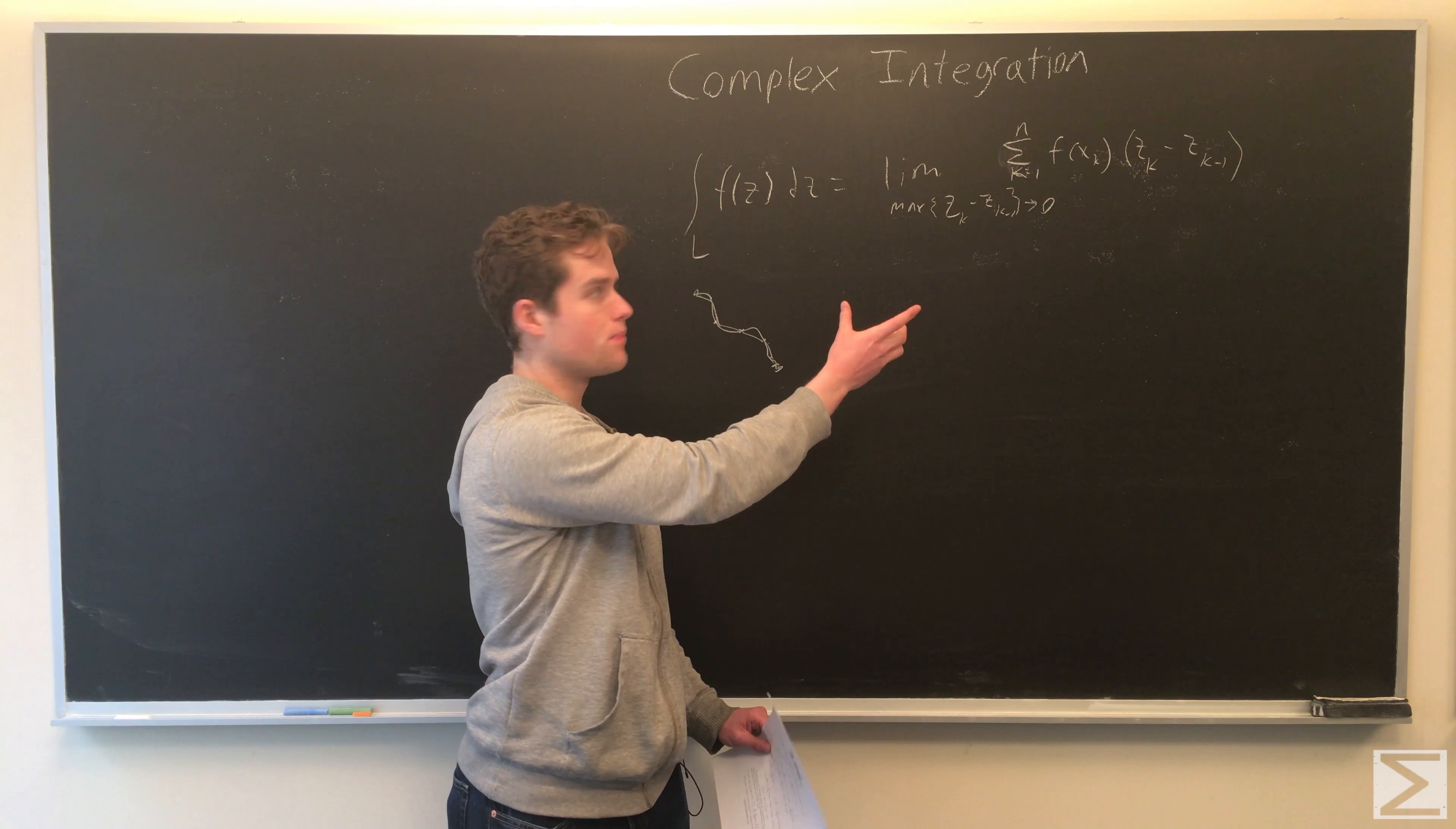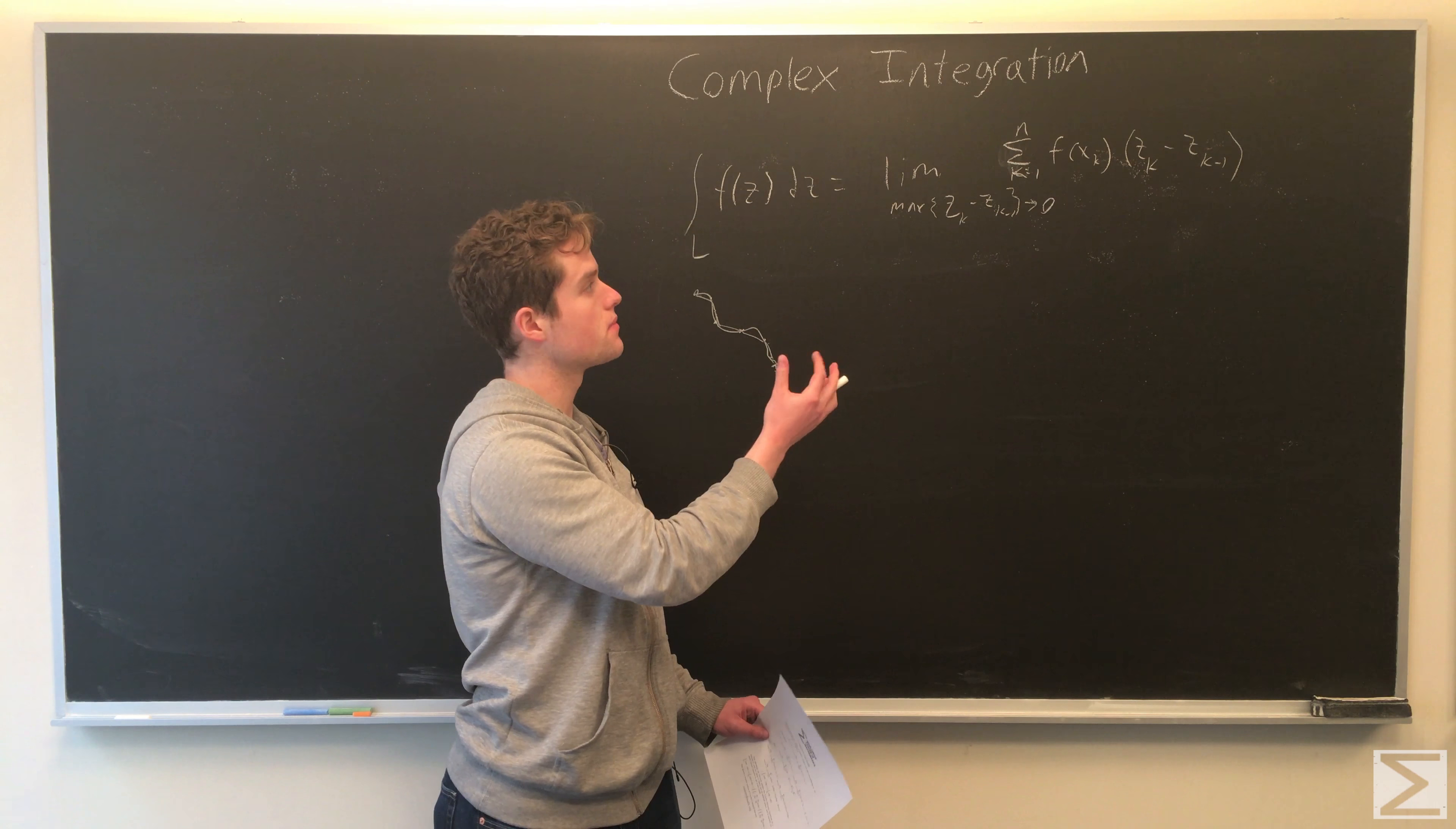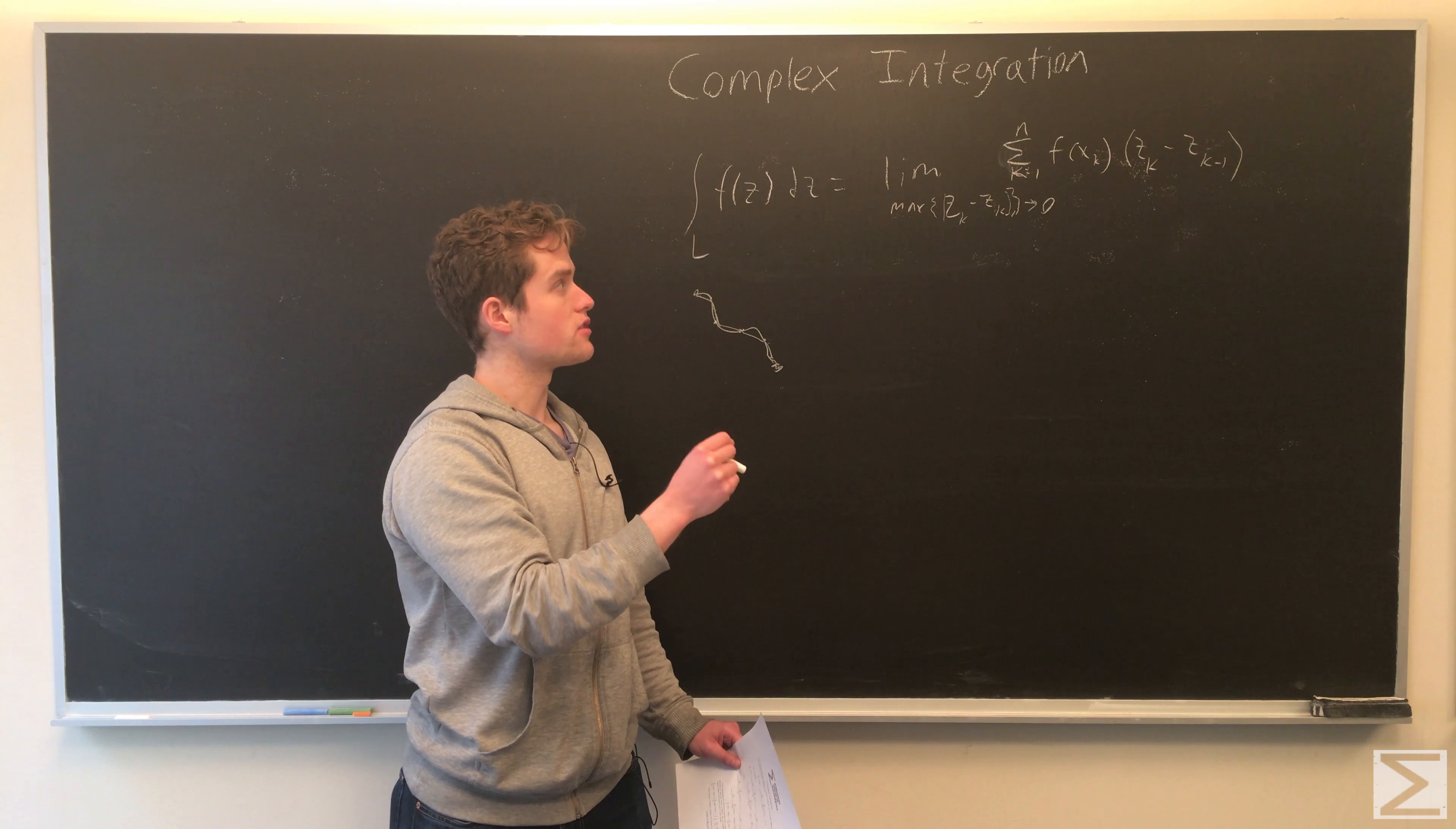It's the limit of a sum, the sum being sum from k equals 1 to n of f(x_k) times (z_k minus z_{k-1}). The limit makes the distance between these z_k minus z_{k-1} go to zero, so these points get arbitrarily close to each other, and our x_k is just a point between z_k and z_{k-1} on our line.